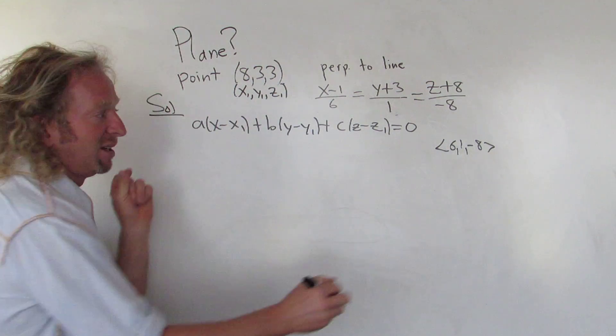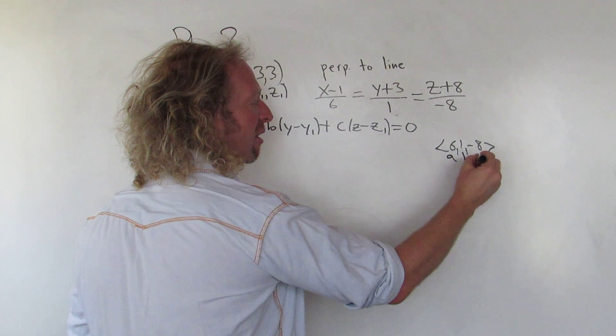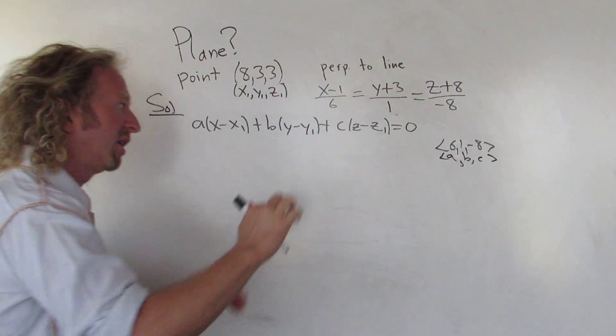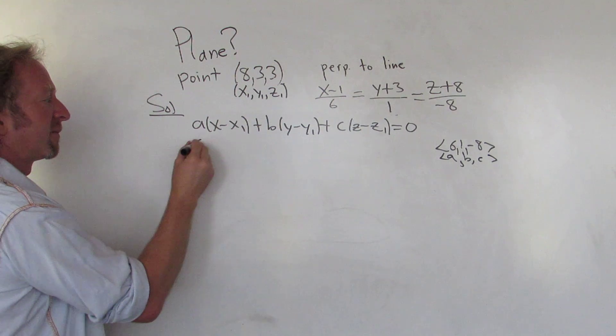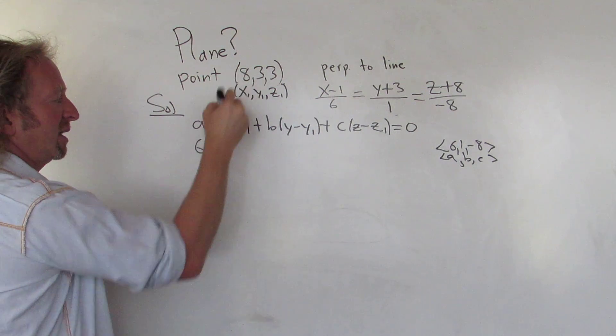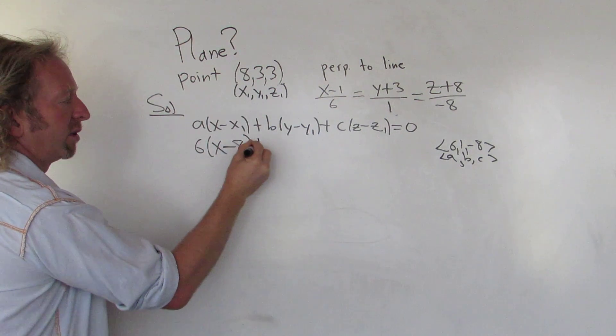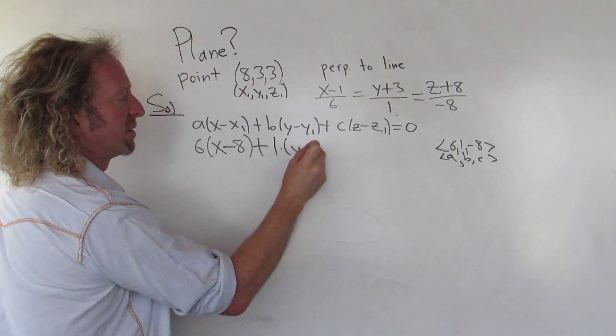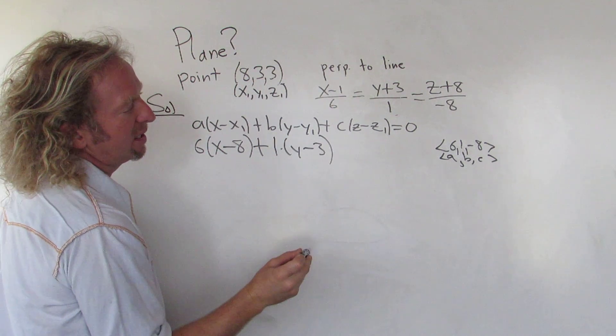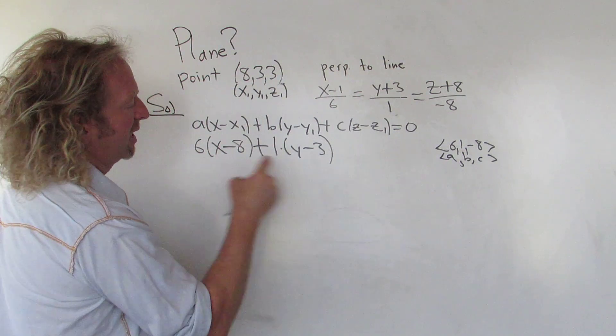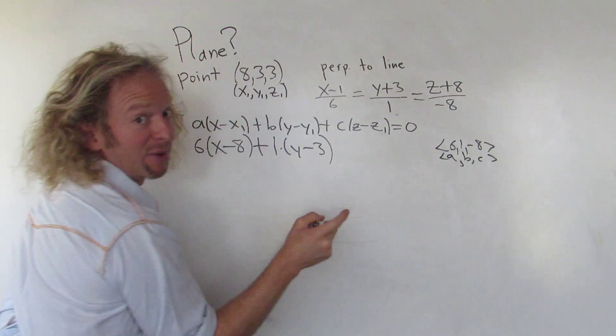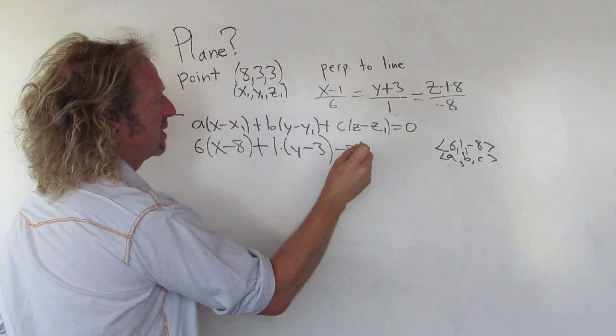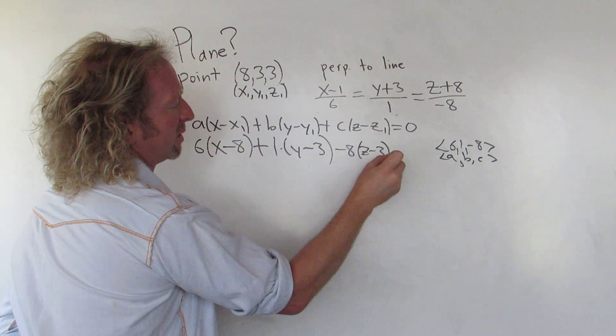So that's our ABC. A little bit harder, a little bit more thinking there. Let's plug everything in. So a is 6, x minus 8, plus, and then b is 1. That's y minus 3. And then c is negative 8. I'm looking here, a, b, c, almost messed up. Really easy to mess up on these. Be really careful when you're doing these problems.